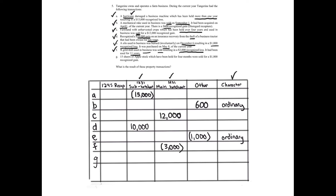Transaction G: 15 shares of Apple stock held for four months were sold for a $1,800 recognized gain. Under the general rules, we have a sale or exchange of a capital asset — stock of a corporation is treated as an investment and is a capital asset. So we have capital gain. It's been held four months, which is a year or less, making this an $1,800 short-term capital gain.